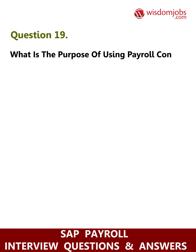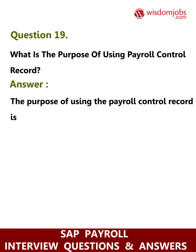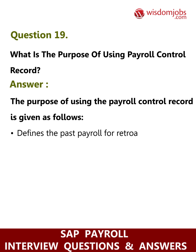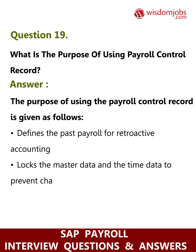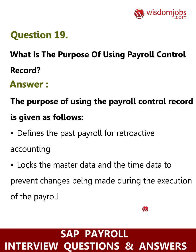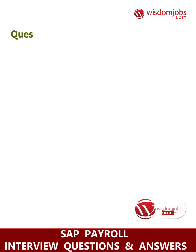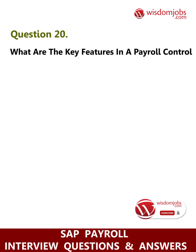Question 19: What is the purpose of using the payroll control record? Answer: The purpose of using the payroll control record is as follows: it defines the past payroll for retroactive accounting, and locks the master data and the time data to prevent changes being made during the execution of the payroll.